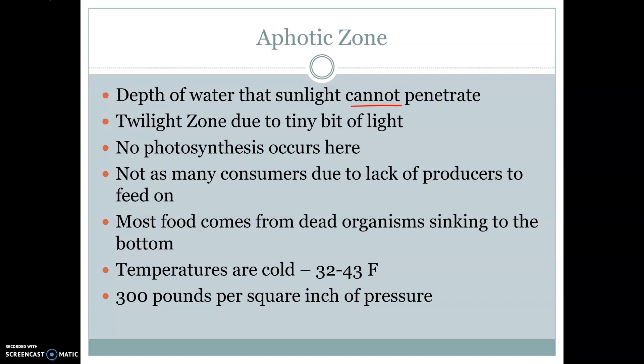At the very top of our aphotic zone, we're going to have something called the twilight zone. This is just a very little bit of light that's able to come through, which is why we call it the twilight zone.